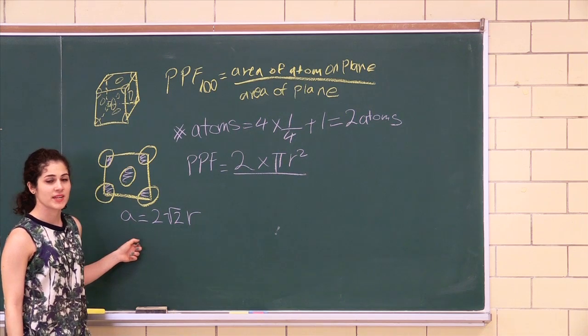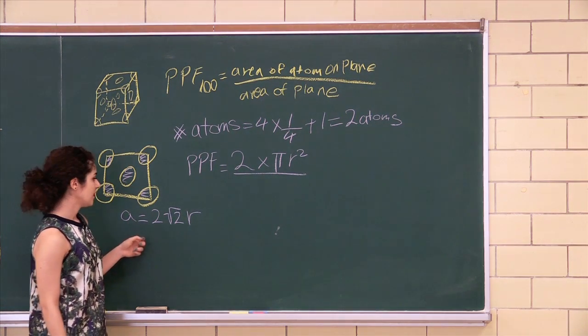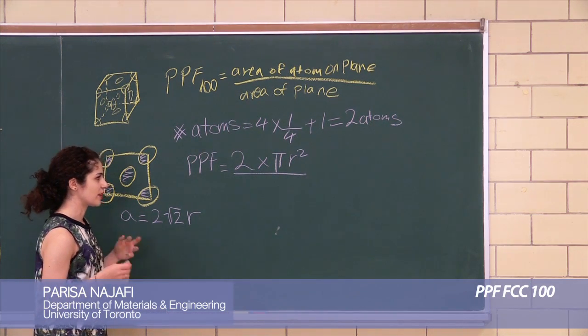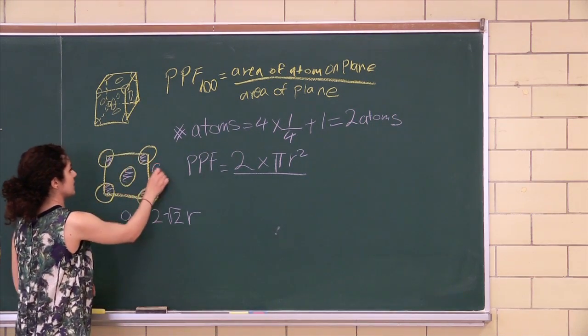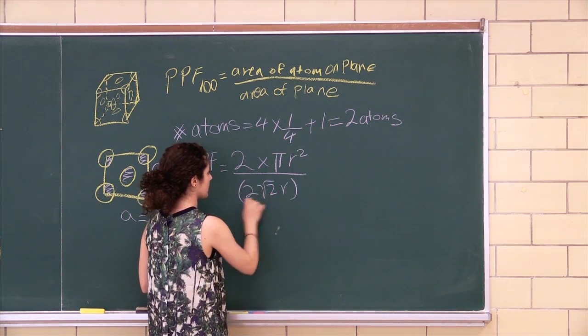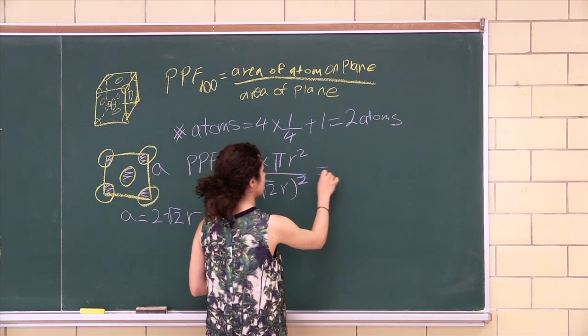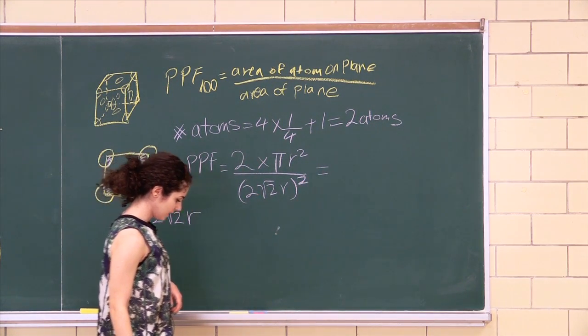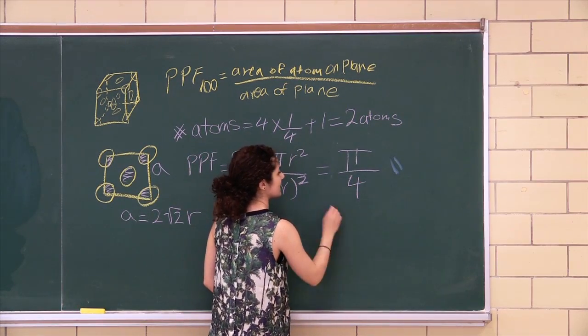I actually recommend memorizing these numbers or check out the other videos I've made to find the a to r ratio and memorize it for the test because it's kind of difficult to derive it all out of nowhere. So the area is a², which is (2√2r)² squared. Okay, so solving for that just gives us π/4.